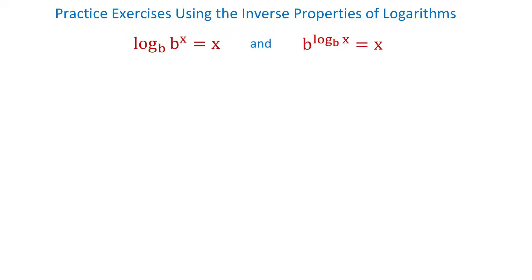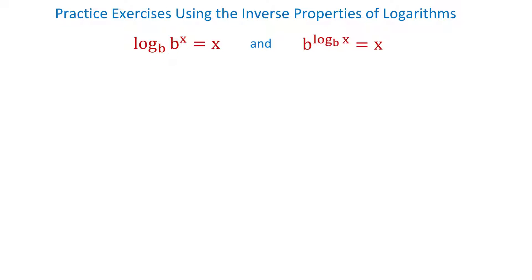In the first property, b is the base, x is the exponent, and b to the x power is the result. So, b raised to the x power equals b to the x power. This means that when this base is the same as this base, this exponent is the same as this exponent.